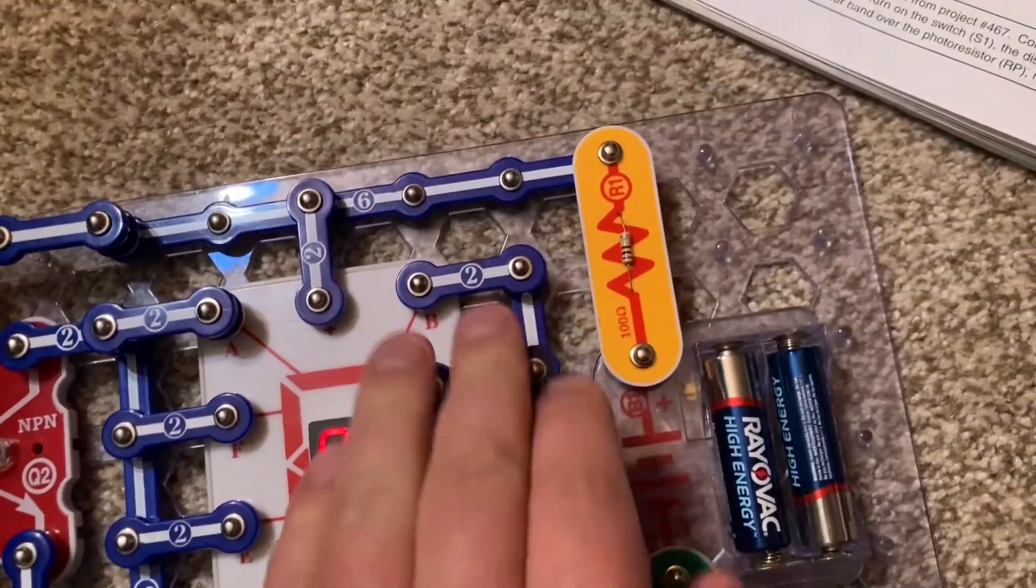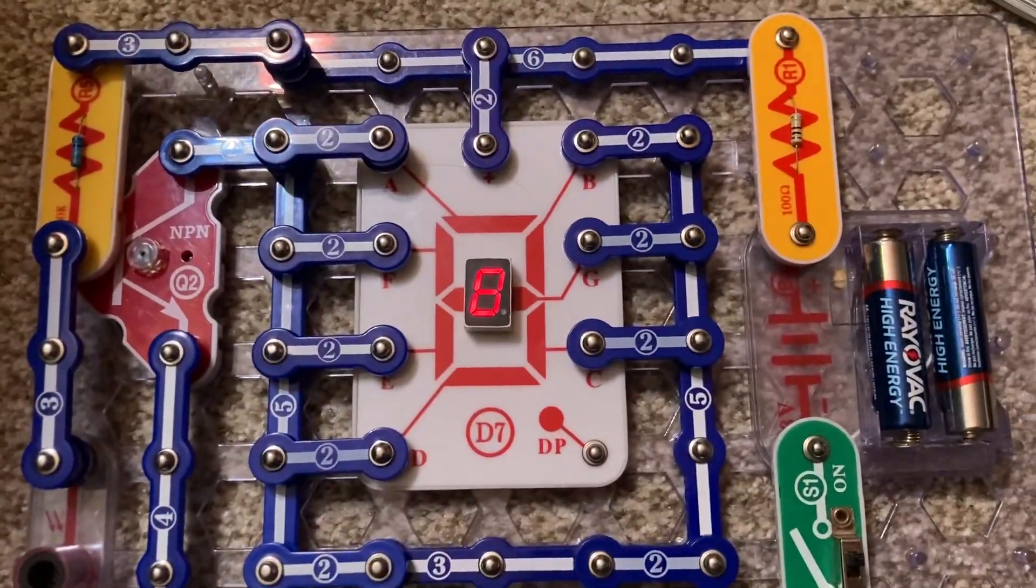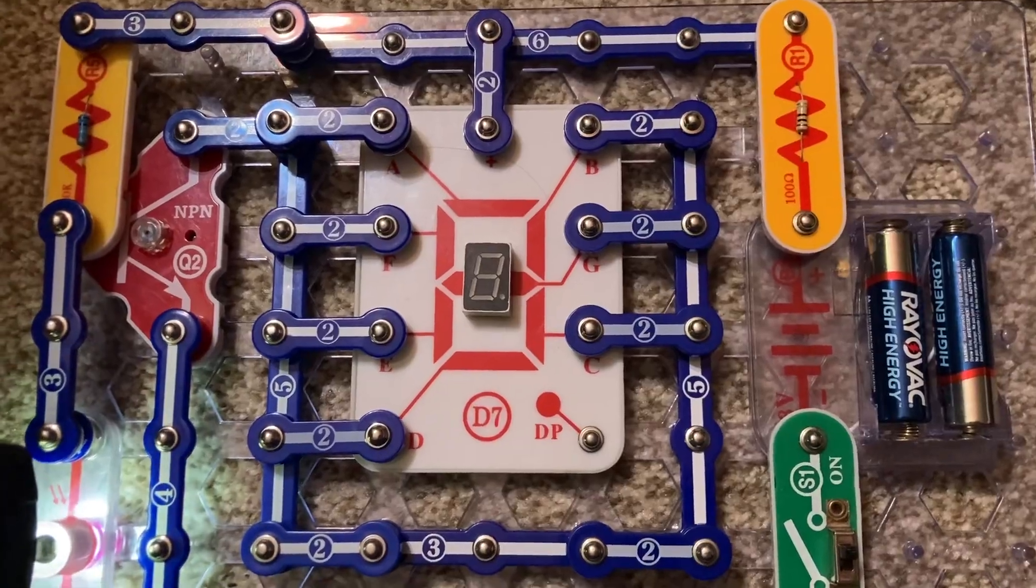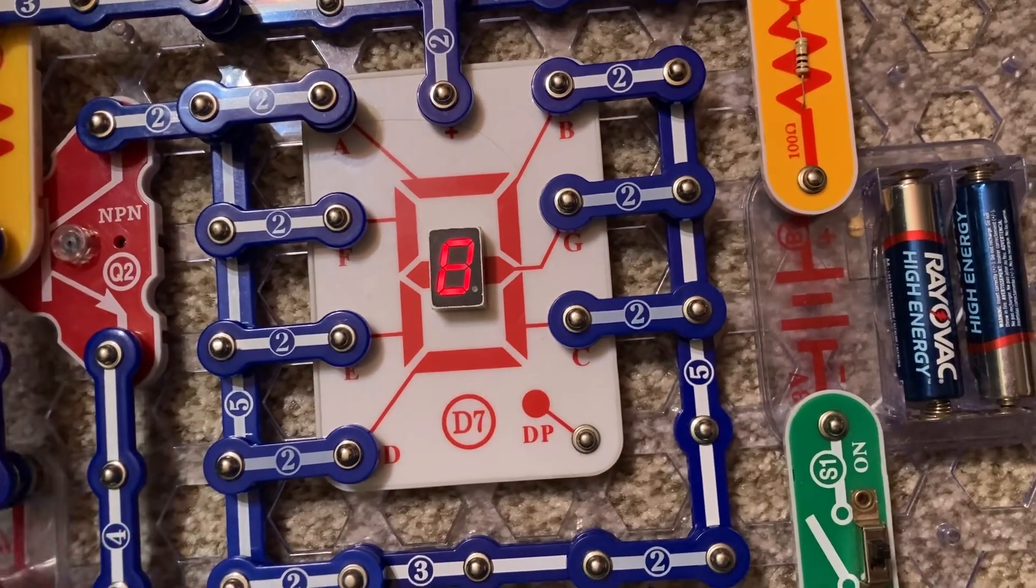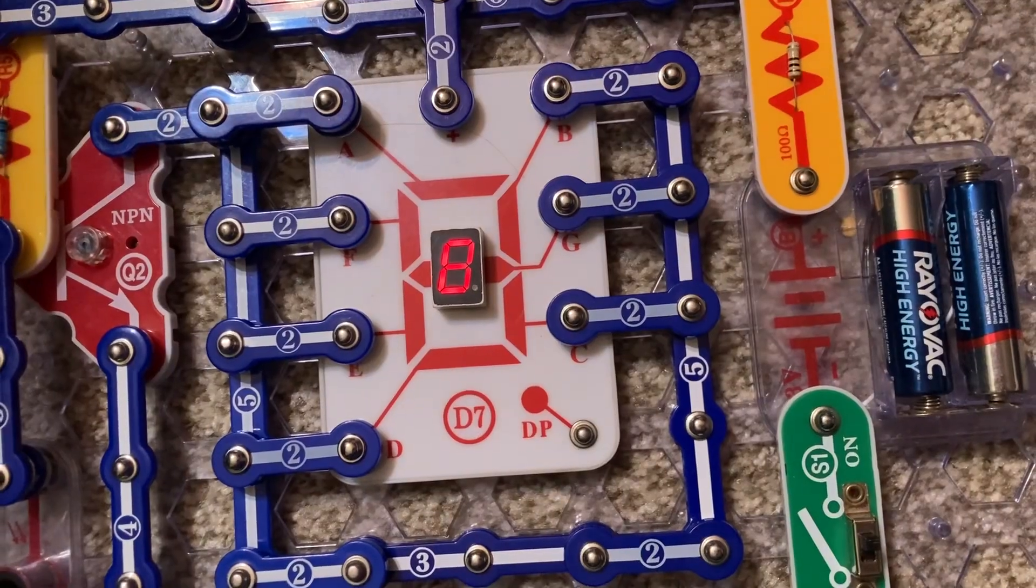This is the number eight. When you shine enough light on the photoresistor, the eight goes out. Remove the light and the eight comes back on.